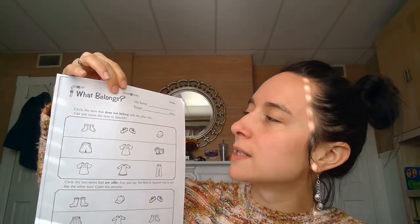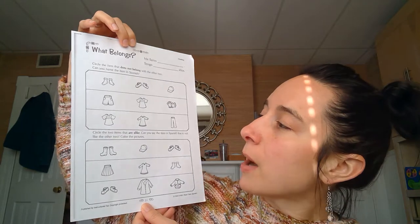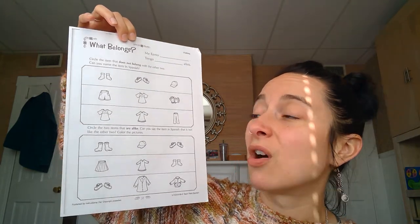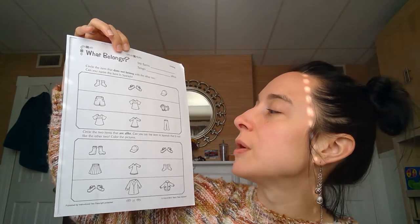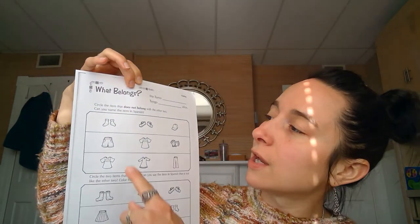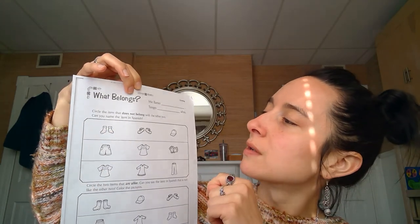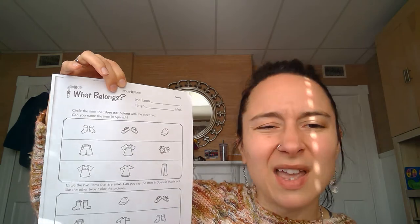It's just a review of how to say some of the words in Spanish. The top box is you're supposed to circle the items that do not belong, and the bottom is you circle the items that are alike or similar. As you do it, you're supposed to try to say the word in Spanish. So here I would say zapatos—oh sorry—calcetines, zapatos, and gorro. It's just a way to practice pronouncing the words a little bit more.